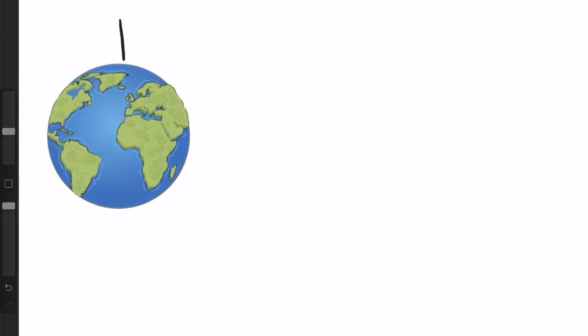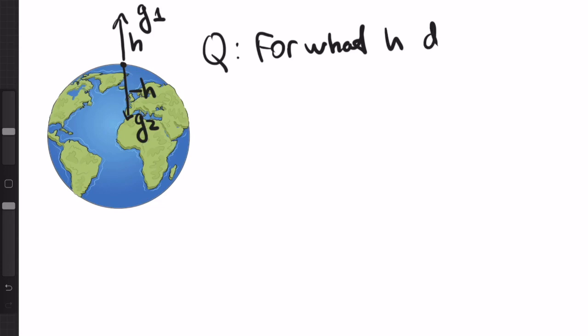So suppose we go at height h above the Earth, where gravity becomes g1, or the acceleration due to gravity becomes g1, and we also go down the Earth for minus h, so for the same distance, and the acceleration becomes g2. The question that I want to ask in this video is for what h does g1 equal g2?